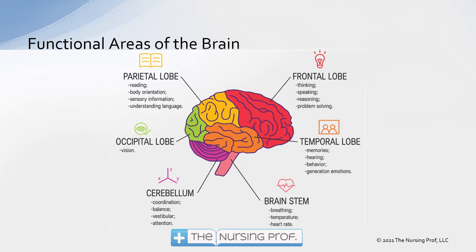The occipital lobe is for vision, and then the parietal lobe, sitting there in between some of these, is for reading, body orientation, sensory information, and understanding language. Now if we have injury to a specific part of the brain, we may lose some of these qualities. We can't separate out all of these different areas of the brain entirely, because they are connected to each other and are all contained within the skull.